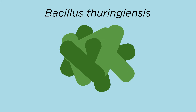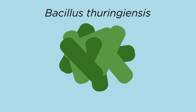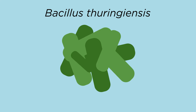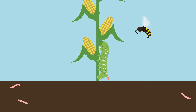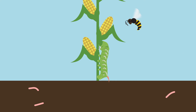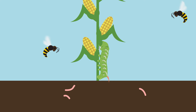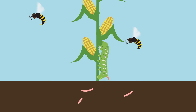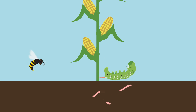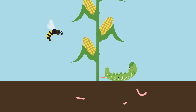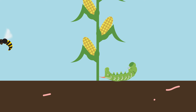Crops have been genetically modified with a gene from a bacterium called Bacillus thuringiensis. This gene causes the cells of the crop plant to produce an insecticide in their leaves that kills insects that eat it. The genetic modification reduces the need for chemical pesticides.